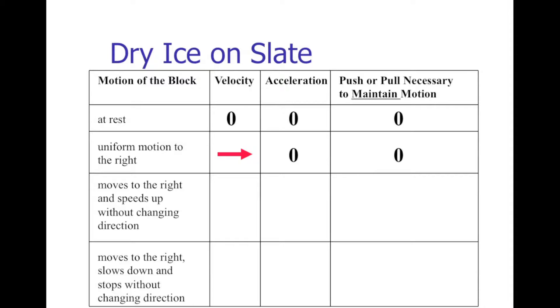Let's say that I find the block and it's moving to the right and I want it to speed up to the right without changing direction. In that case, there will be velocity to the right, and because it's changing its speed, that is, it's getting faster over time, it is accelerating, and its acceleration is to the right. In order to maintain that motion, if I want it to continue to speed up moving to the right, I need to constantly be applying a force to the right on the block, and it can't be balanced out with any other force.